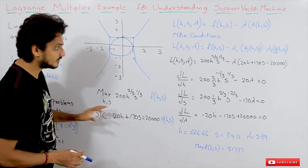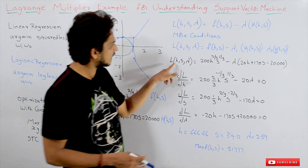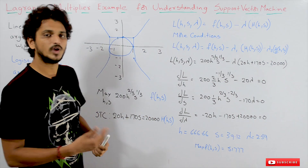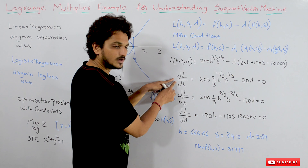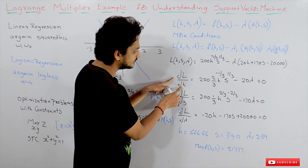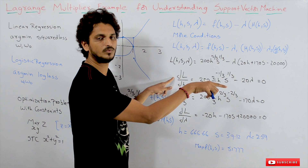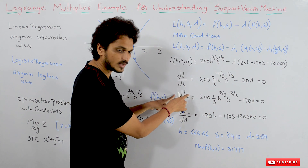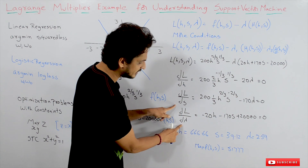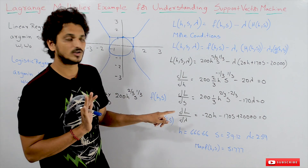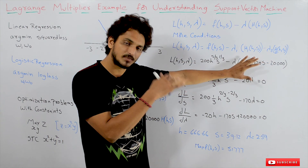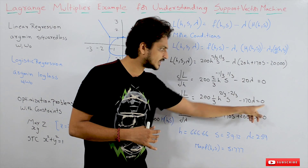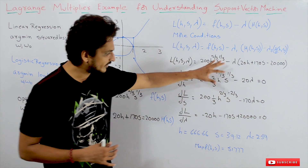Now we have to convert our optimization function into the Lagrangian function: L(h, s, λ) = 200·h^(2/3)·s^(1/3) − λ·(20h + 170s − 20000). Then we apply partial differentiation of the Lagrangian with respect to h and equate to 0, partial differentiation with respect to s and equate to 0, and partial differentiation with respect to λ and equate to 0. This gives us three equations, from which we identify h, s, and λ values.